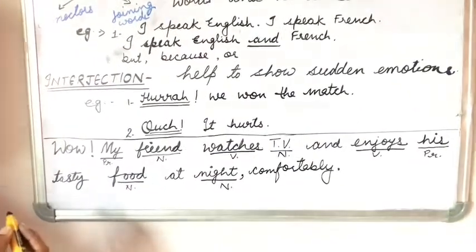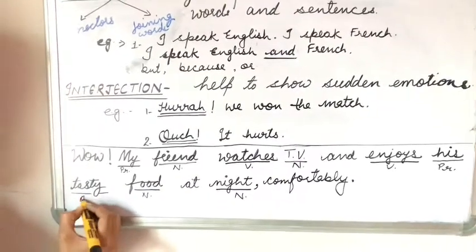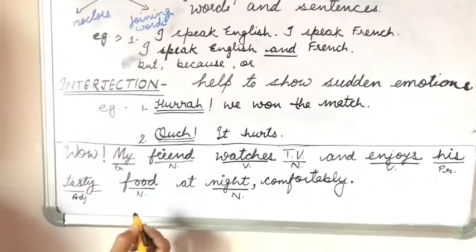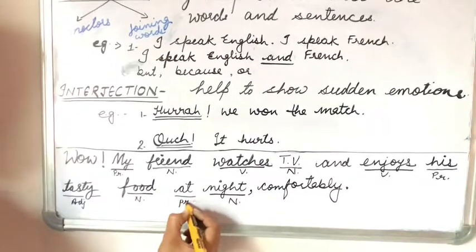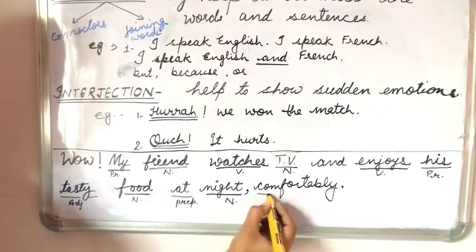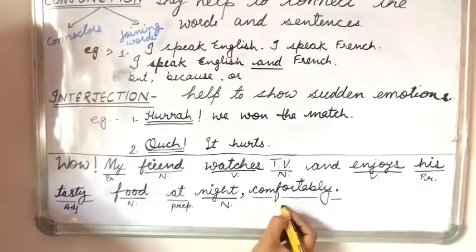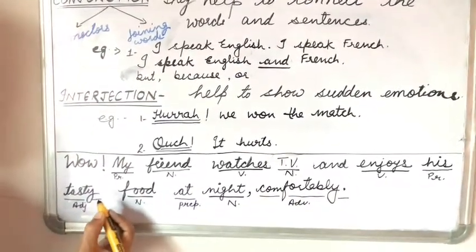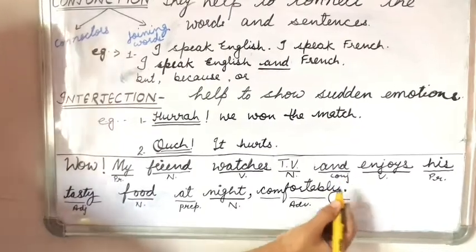Now let's find the adjective. Here there is only one adjective given, and that is 'tasty.' It is an adjective — it is describing the quality of food. Now let's see the preposition, which is 'at.' It is telling about the time. Next is the adverb, which is 'comfortably' — it is telling more about the verb. And the conjunction is 'and,' which is joining two sentences.